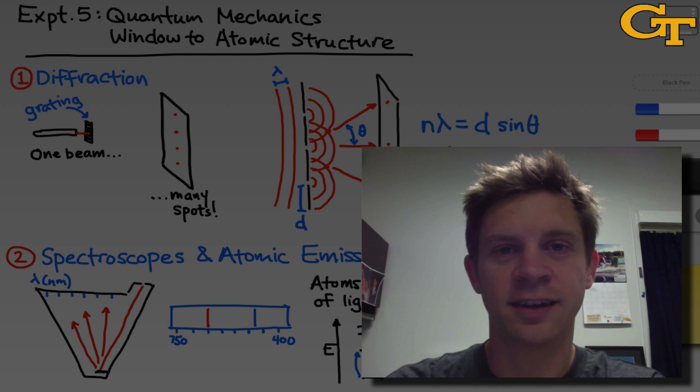Experiment 5 in Chem 1310 is titled Quantum Mechanics, Window to Atomic Structure. In this experiment, we're going to investigate the quantum properties of atoms.